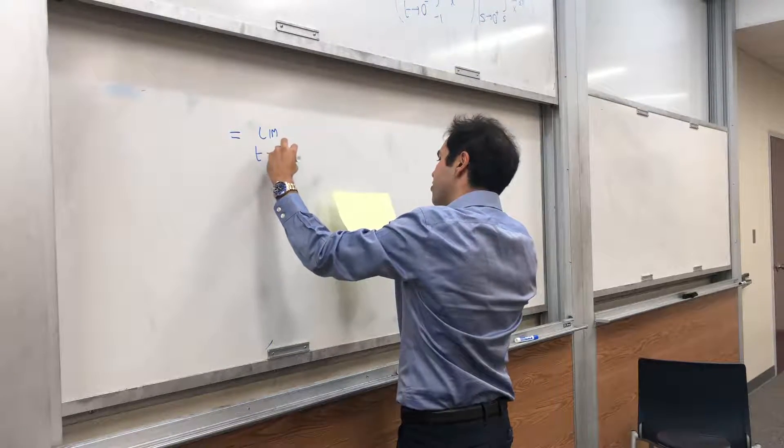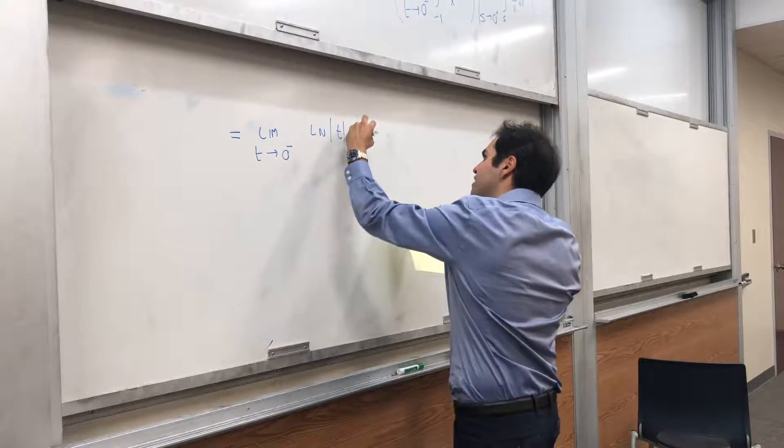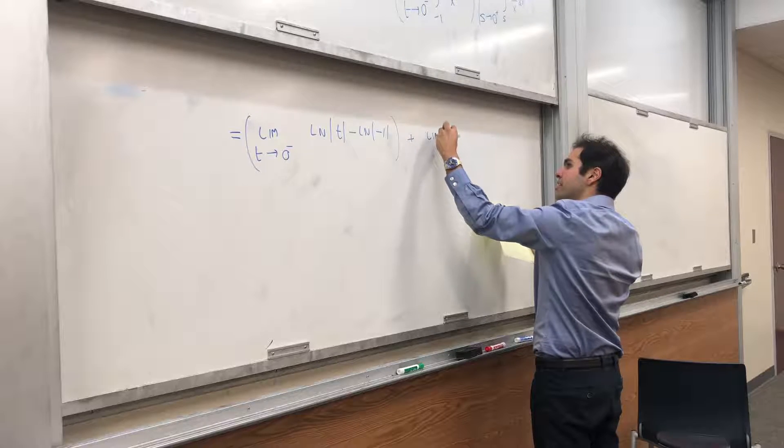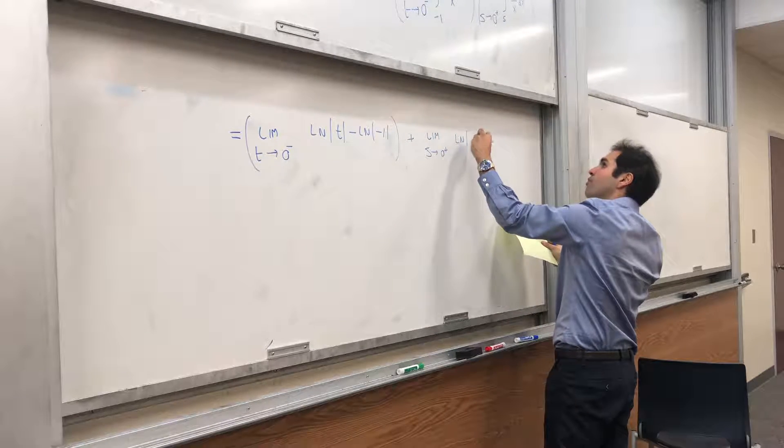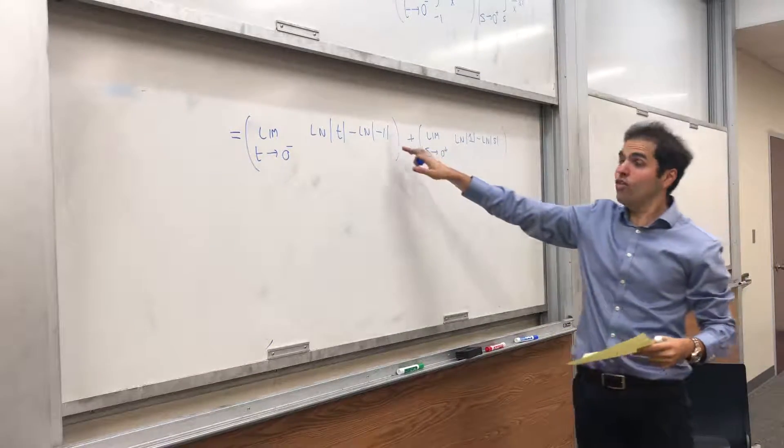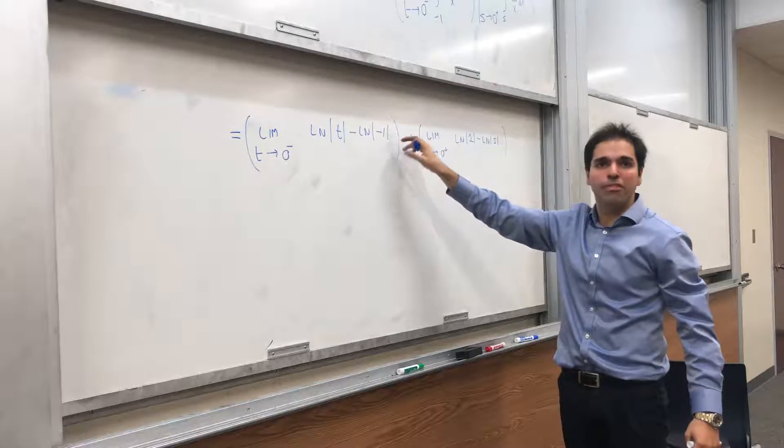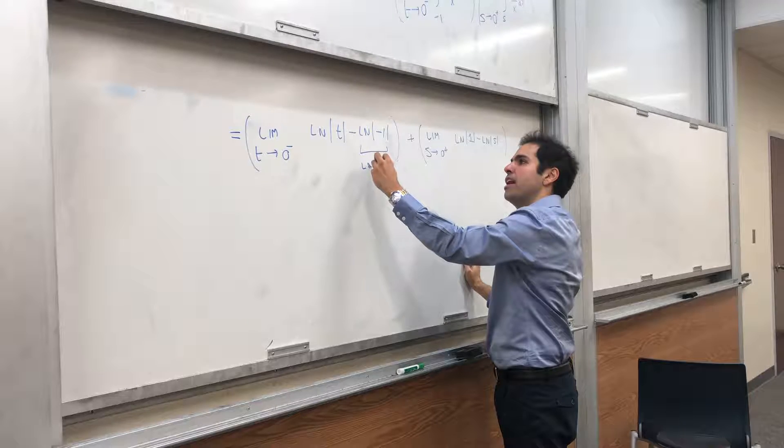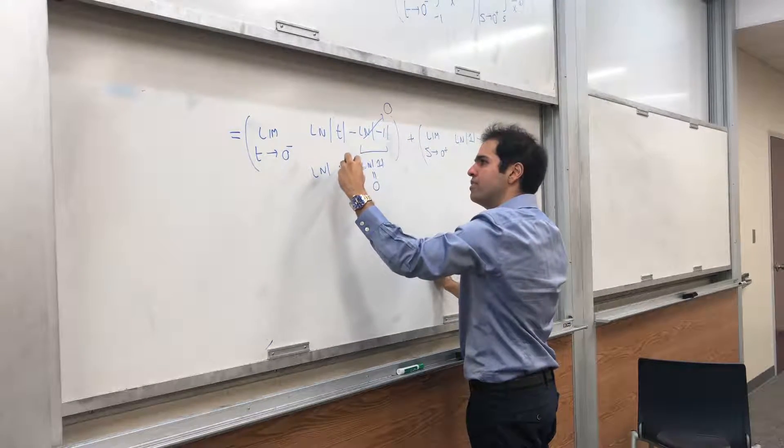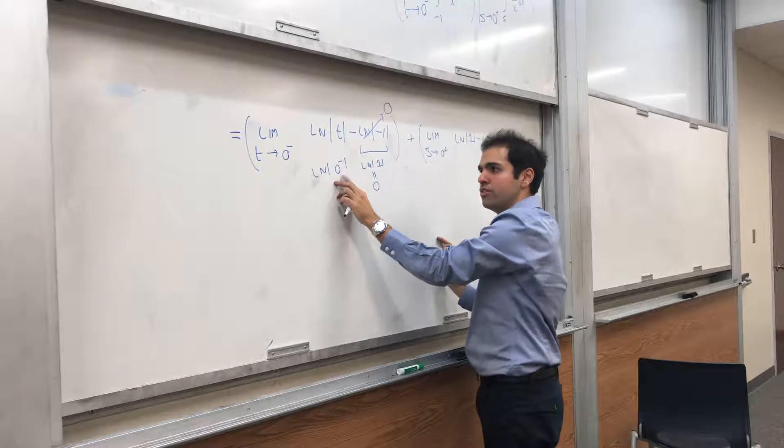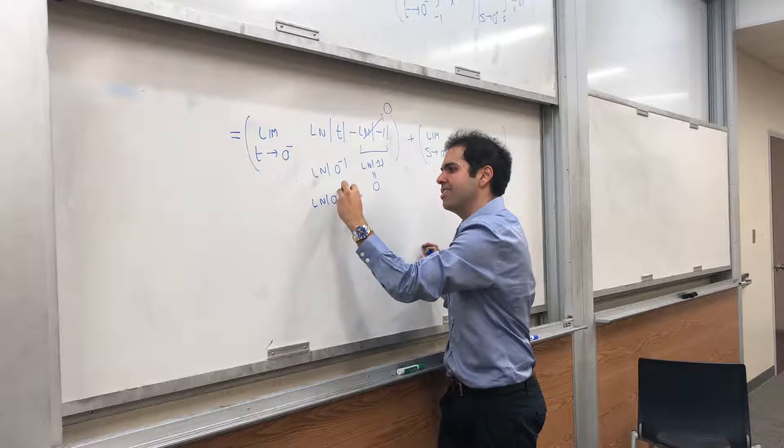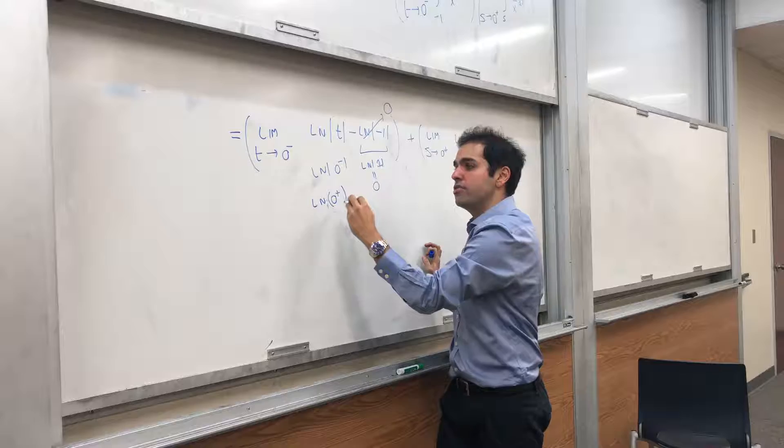So this is limit as t goes to 0 minus of ln of absolute value of t minus ln of absolute value of minus 1, plus the limit as s goes to 0 plus of ln of absolute value of s. Well, and don't forget about the absolute value. Number one mistake I see is people forgetting about this. ln of absolute value of minus 1 is ln of 1, which is 0, so this term disappears. And this is ln of 0 minus. But if you take absolute values, 0 minus is like minus 0.0001. If you take absolute values, it becomes 0.0001. So it really becomes ln of 0 plus, which is minus infinity.